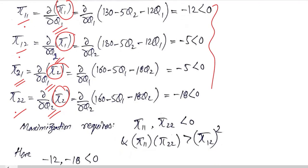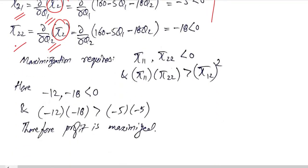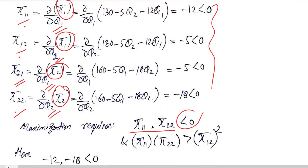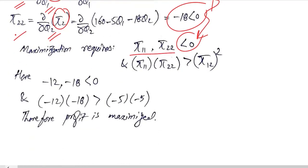Now we can interpret these results. π11 and π22 both are negative as you can see. Then we have to do the second part of the condition, the inequality. We have substituted the values here. The answer is satisfied because the right hand side is greater than the left hand side, so the profit is maximized here.